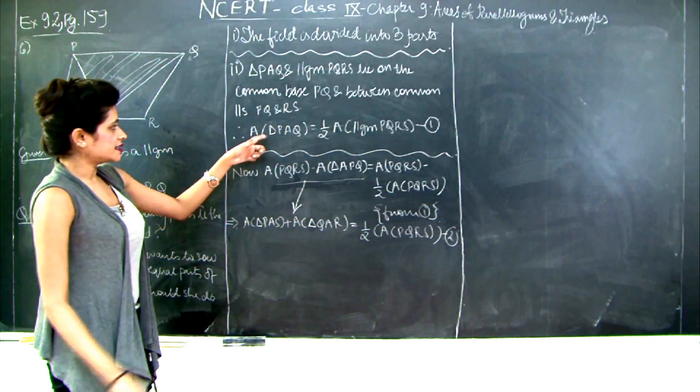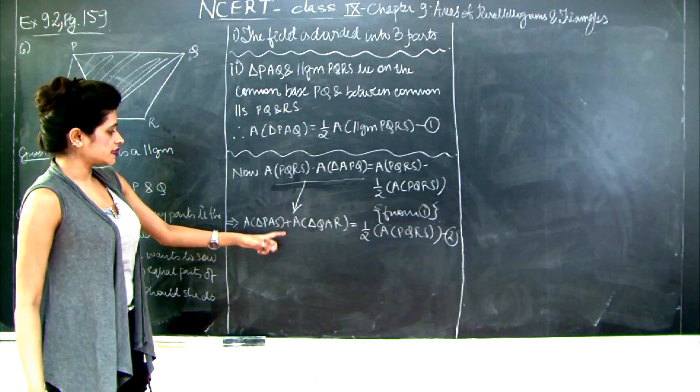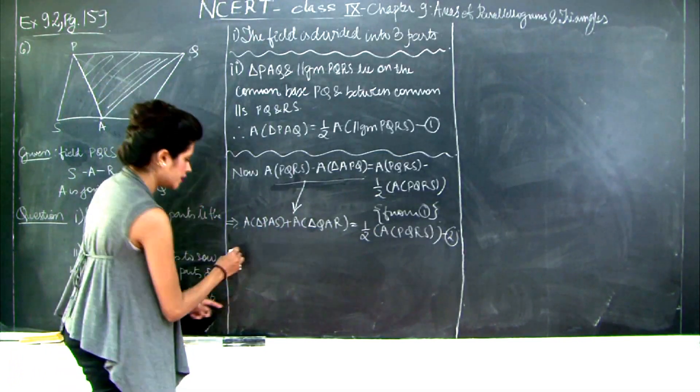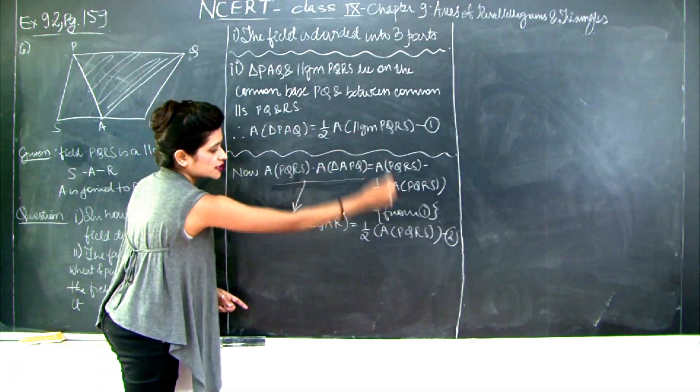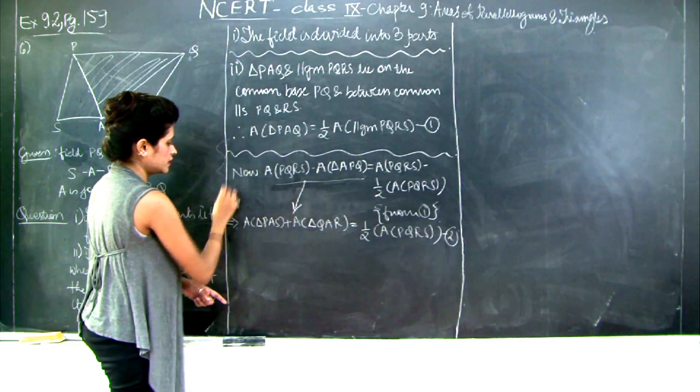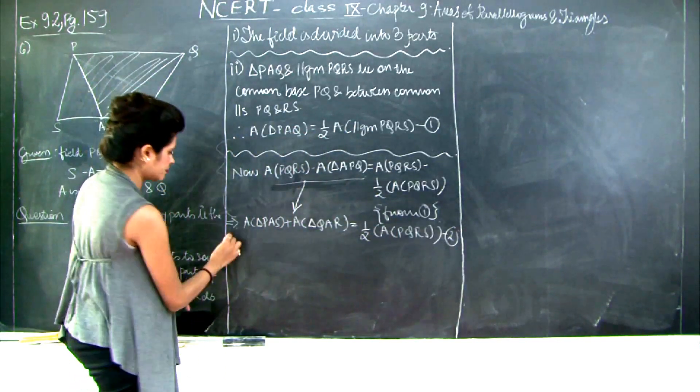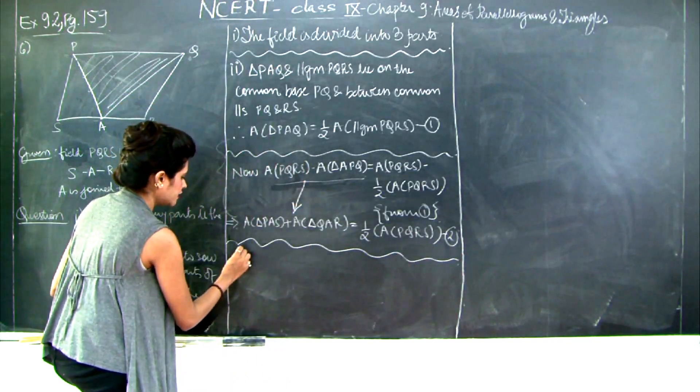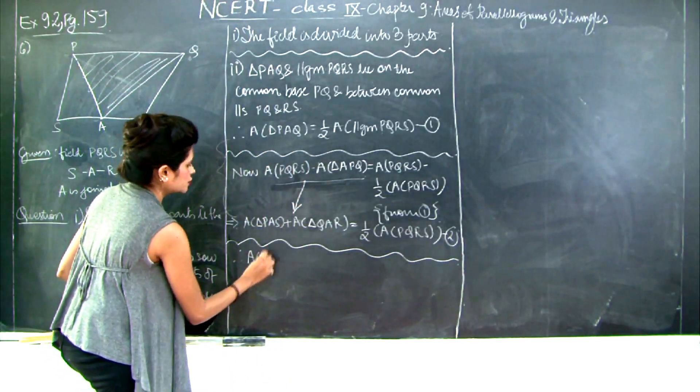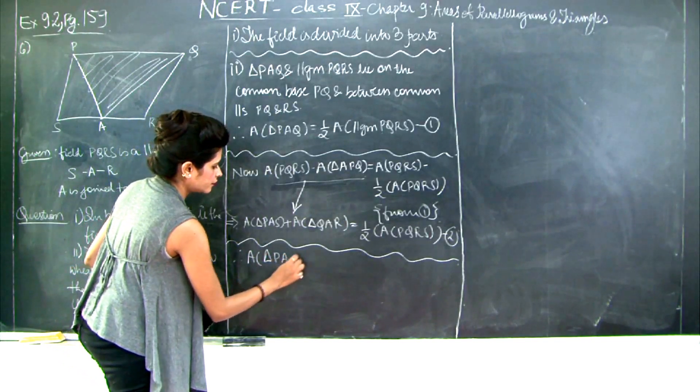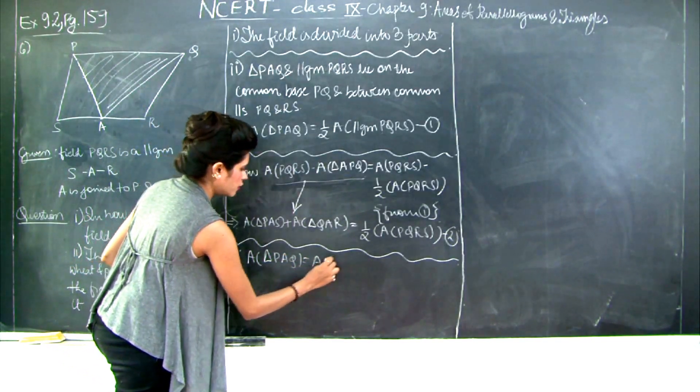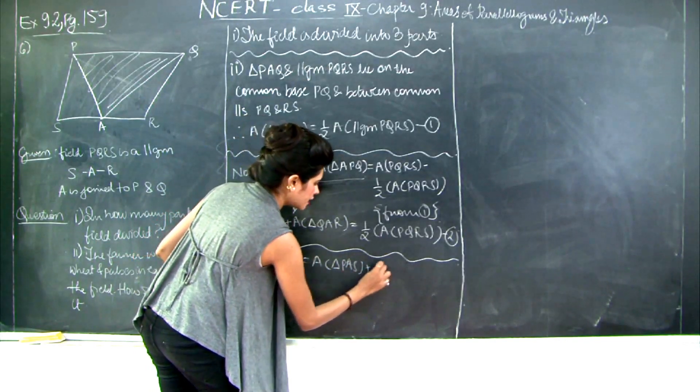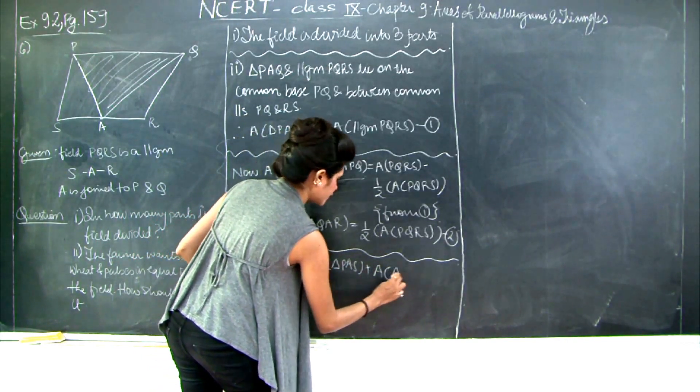So from equations 1 and 2, what do you get? That area of triangle PAQ is equal to area of triangle PAS plus area of triangle QAR, because quantities that are equal to the same thing are equal to each other. Therefore these left hand sides are equal.